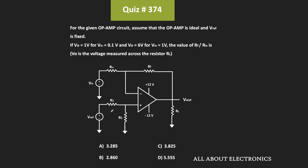Welcome to the YouTube channel all about electronics. In this question we've been given an op-amp circuit and we've been asked to find the ratio of Rf to Rin. The given op-amp is ideal, and Vreference is some fixed voltage. We've been given conditions: whenever Vin is equal to 0.1 volt, Vout is equal to 1 volt, and whenever Vin is equal to 1 volt, Vout is equal to 6 volts.